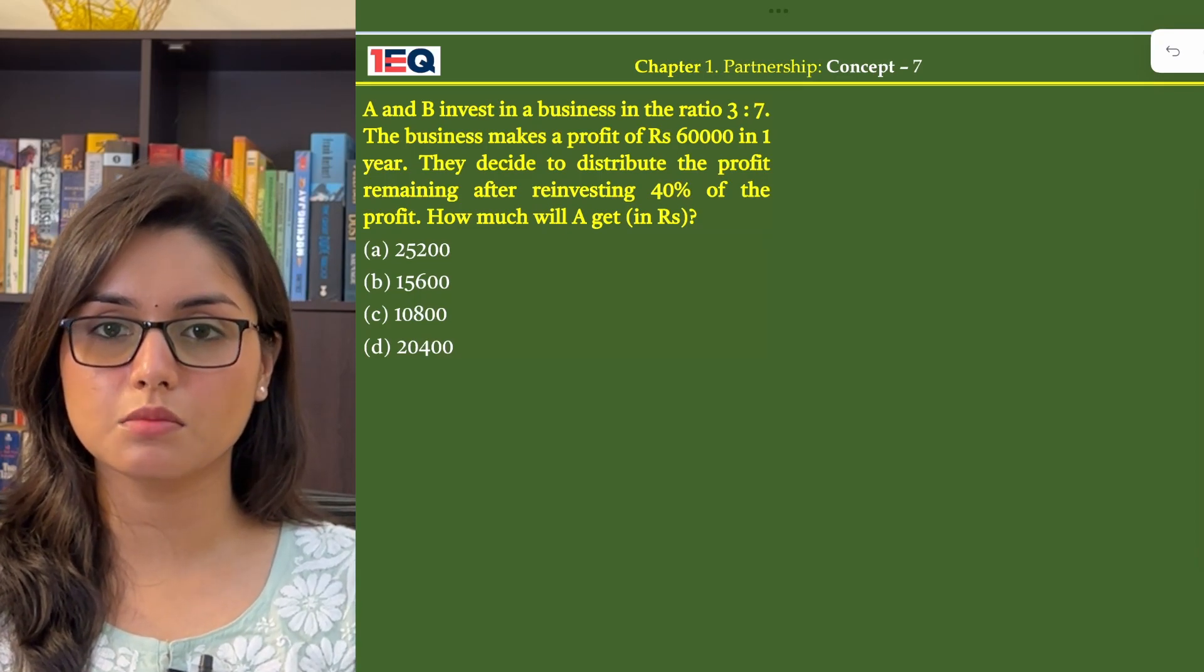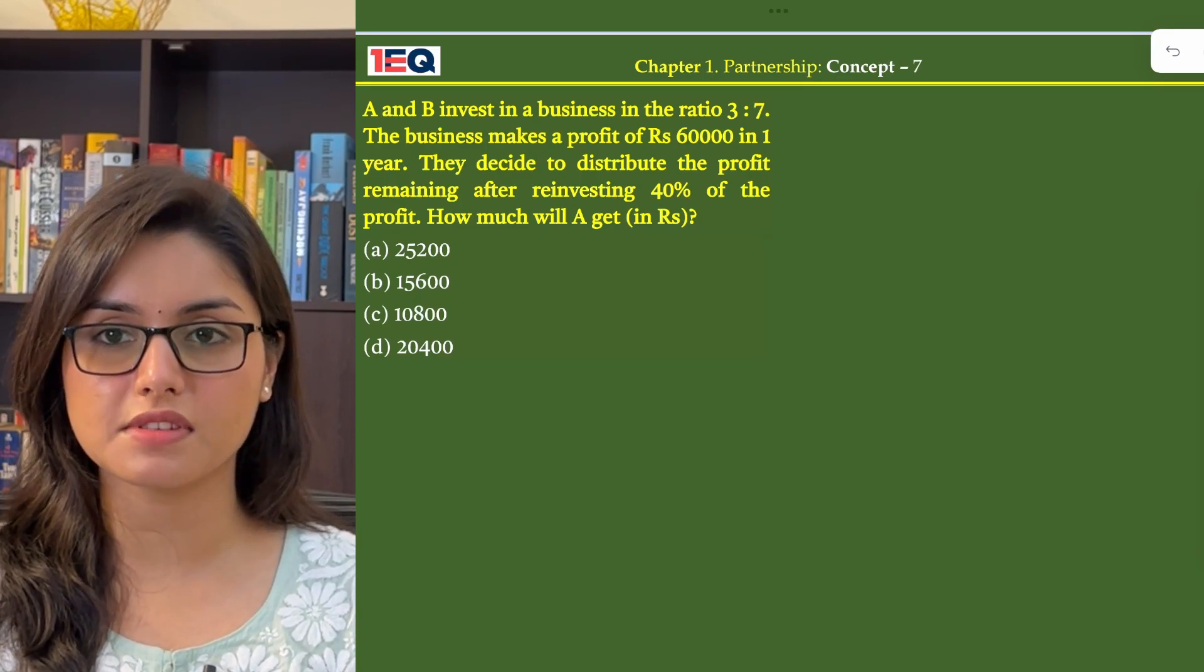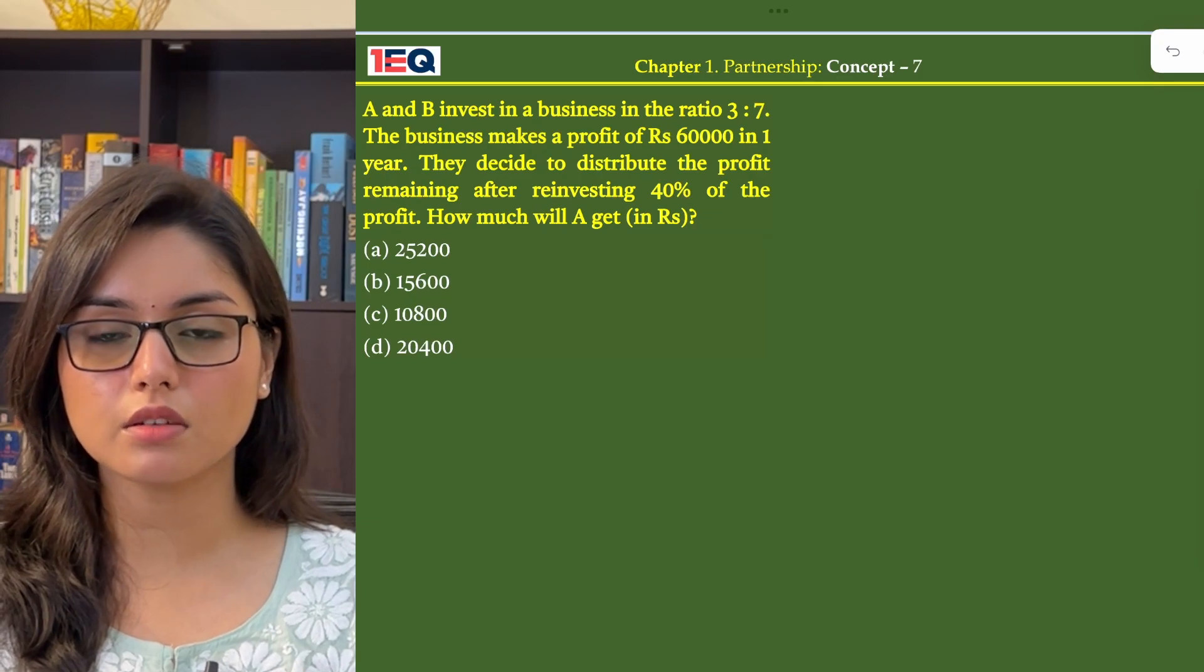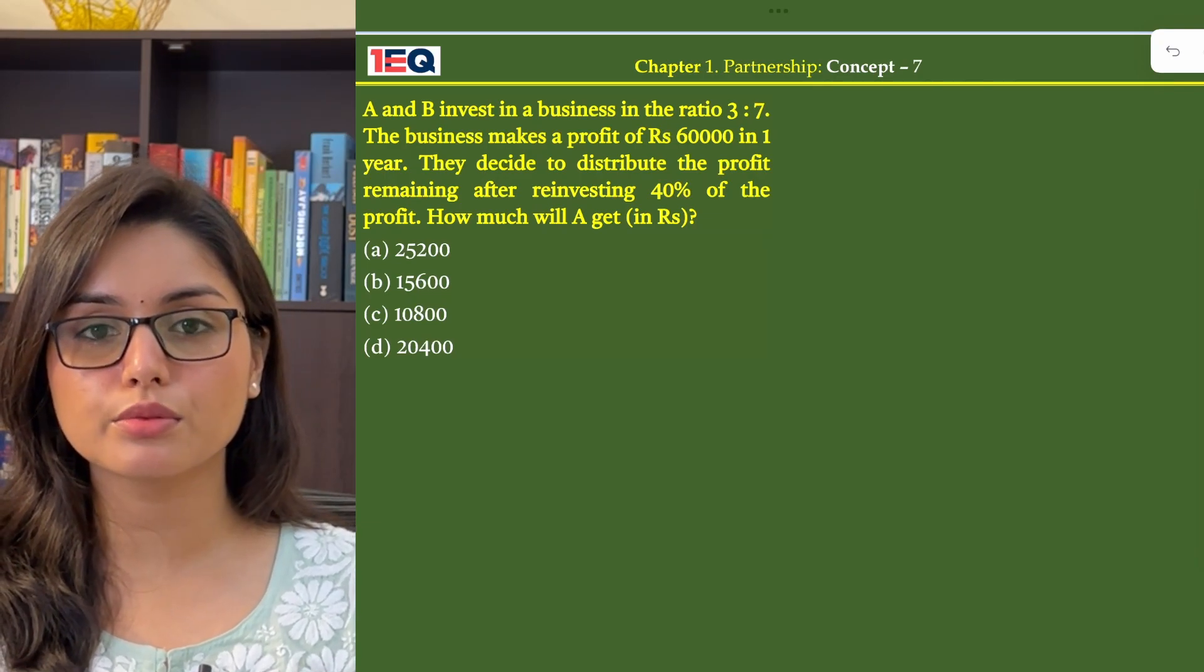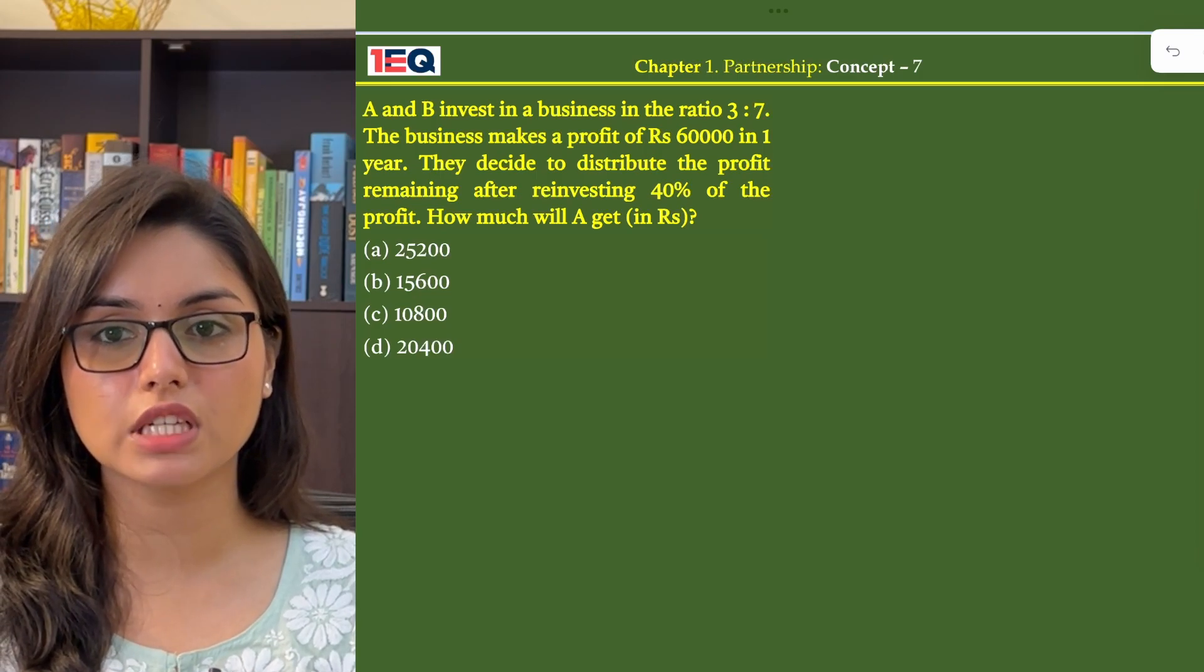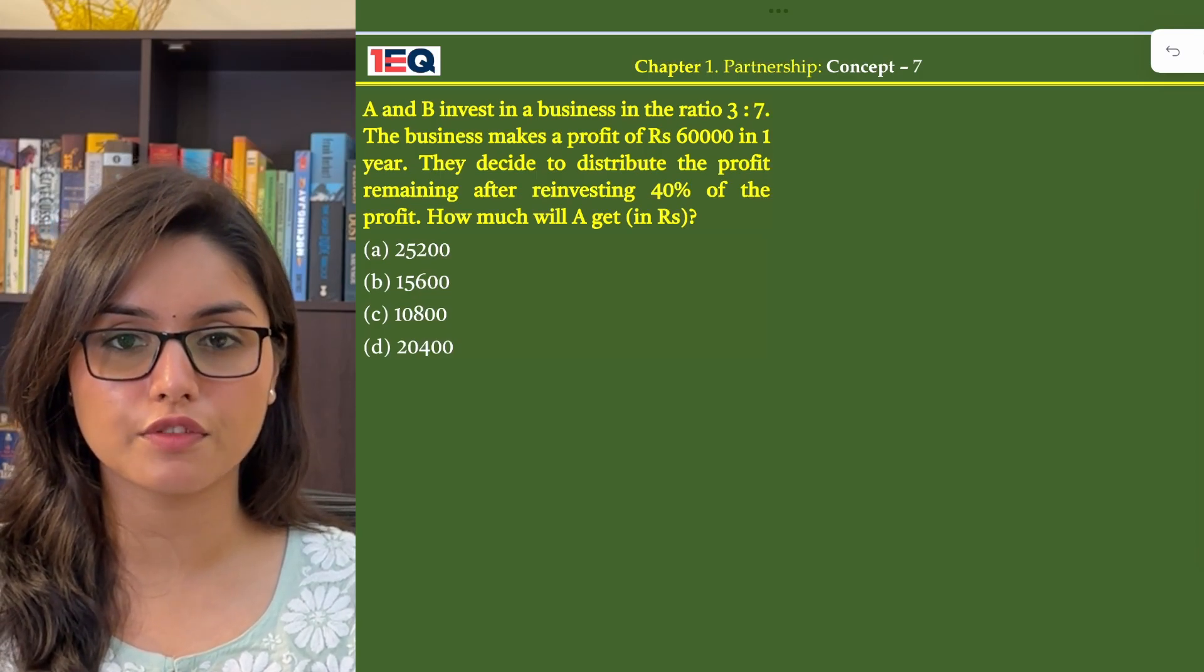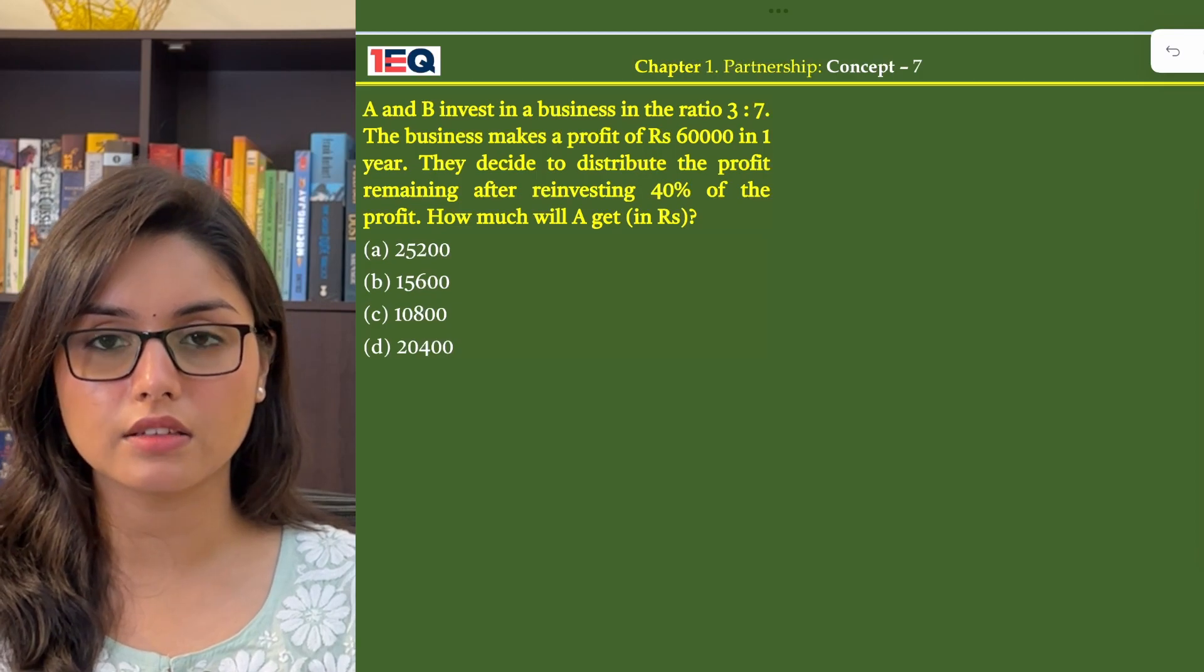A and B invest in a business in the ratio 3 is to 7. The business makes a profit of 60,000 in one year. They decide to distribute the profit remaining after reinvesting 40% of the profit. How much will A gain?